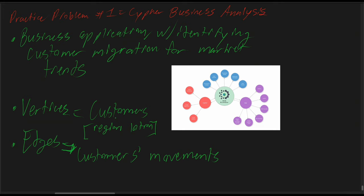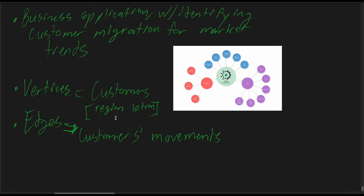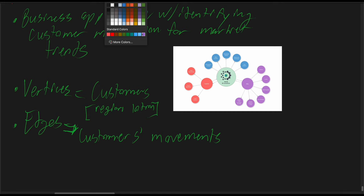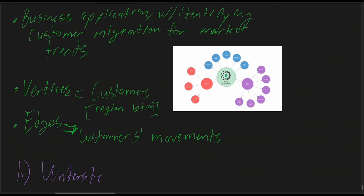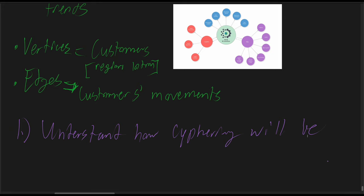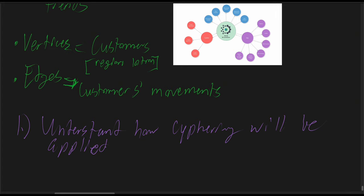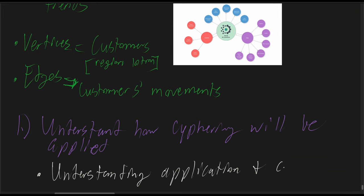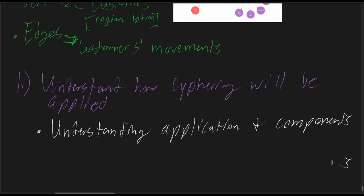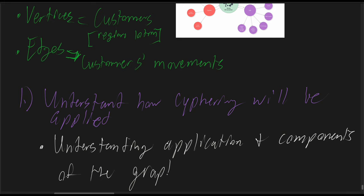Every graph data model is always going to have vertices and edges where the vertices are the entities and the edges are always the relationships. In the context of the entities, the vertices are going to be customers, and other data we will be looking for is going to be the region or location. The edges will be focusing on where each customer is moving, each move they make. Customers move. After we have established our context, we need to fully understand how ciphering will be applied.